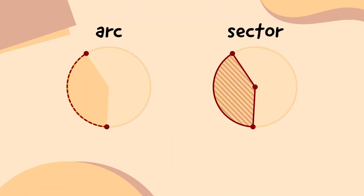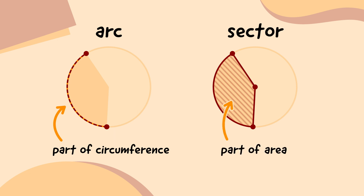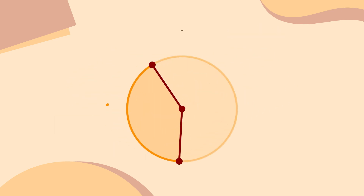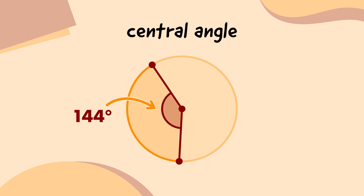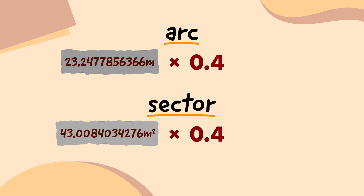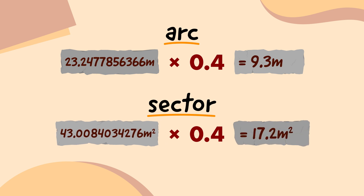So I'm going to quickly remind myself one more time. The arc is part of the circle's circumference, and the sector is part of the circle's area, so we need to work out the full circumference and area first. Then we work out how big the portion is by measuring the central angle of the portion and dividing it by 360. Finally, we multiply the answer by the circumference to get the arc length, and by the area to get the sector area.